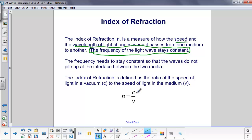The speed of light is typically always shown as C, and that's roughly 3 times 10 to the 8th meters per second, and the velocity of light in the medium, and that's V.